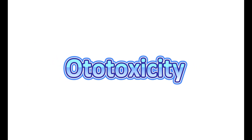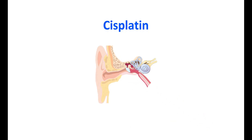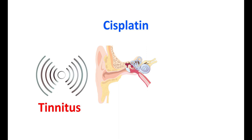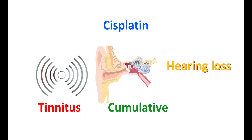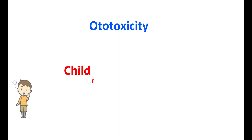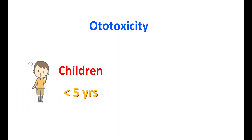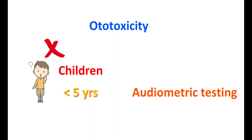Another important side effect is ototoxicity. Cisplatin affects the vestibular system and can produce tinnitus — a buzzing noise in the ears. At increased doses, it can also cause hearing loss that impairs normal conversation, and this effect is cumulative, becoming more pronounced with repeated usage. Ototoxicity is observed more in children, particularly those under five years of age, and cisplatin is not recommended in such pediatric patients. Audiometric testing should be performed during treatment to check for hearing loss and tinnitus.